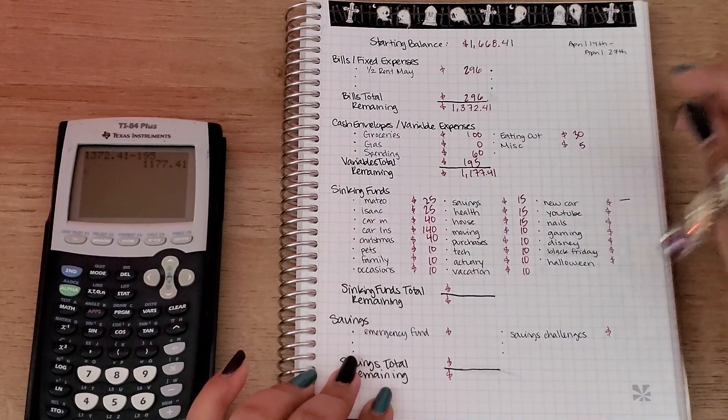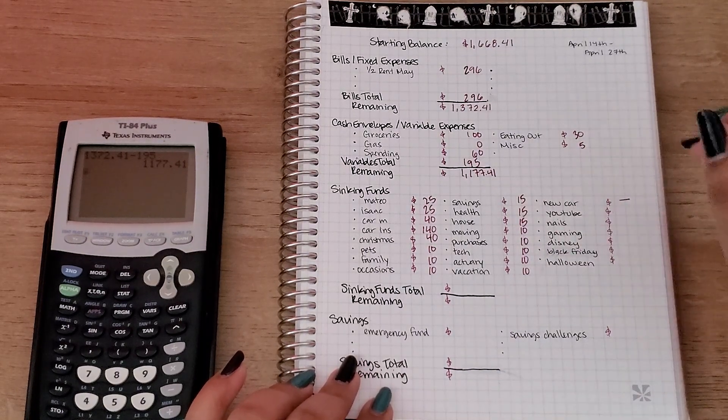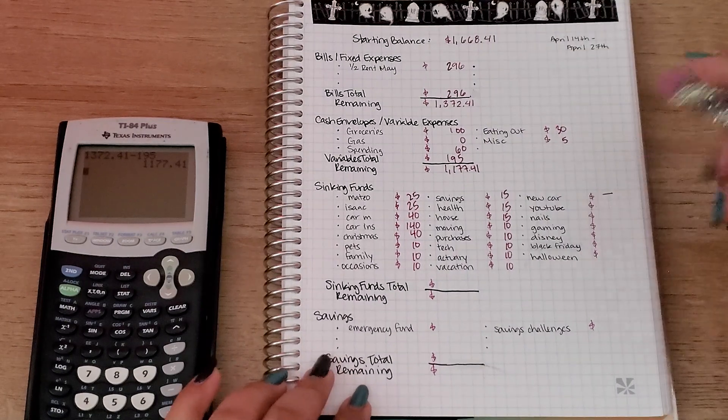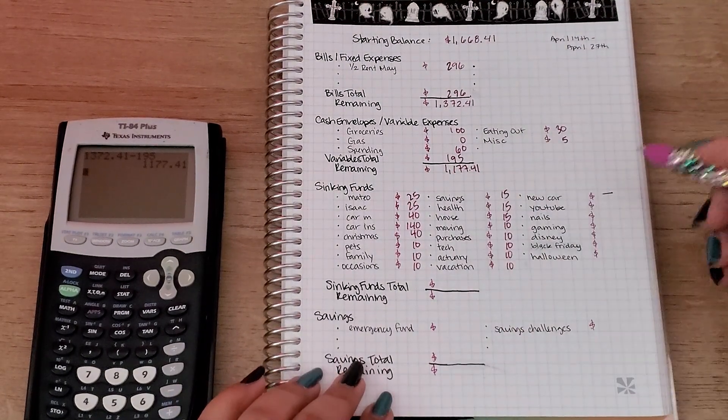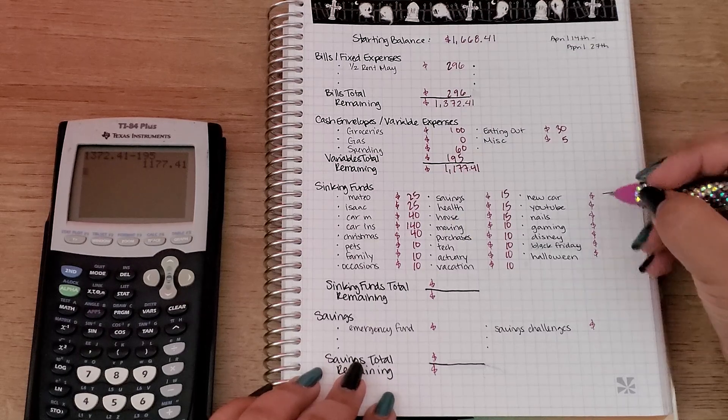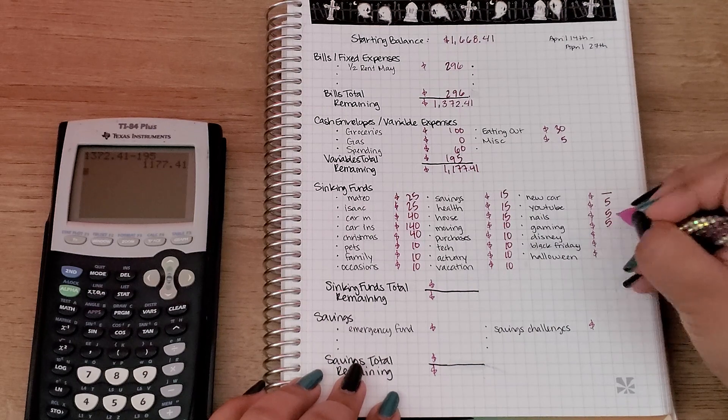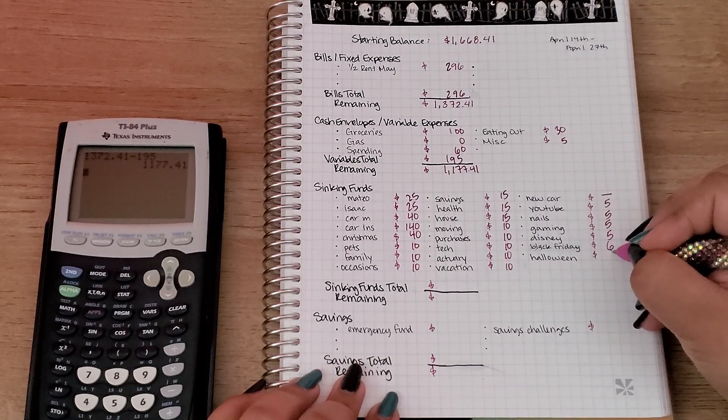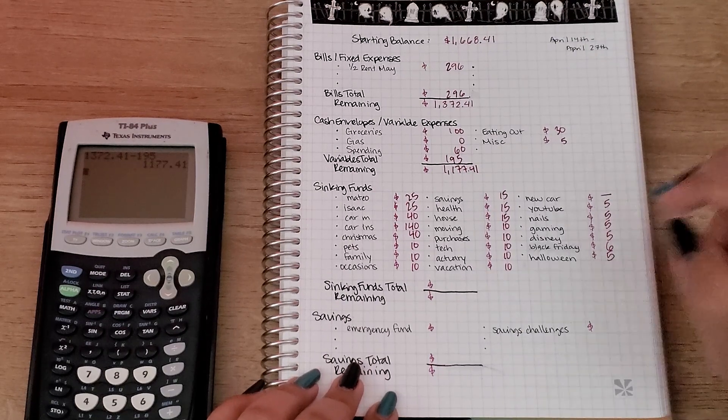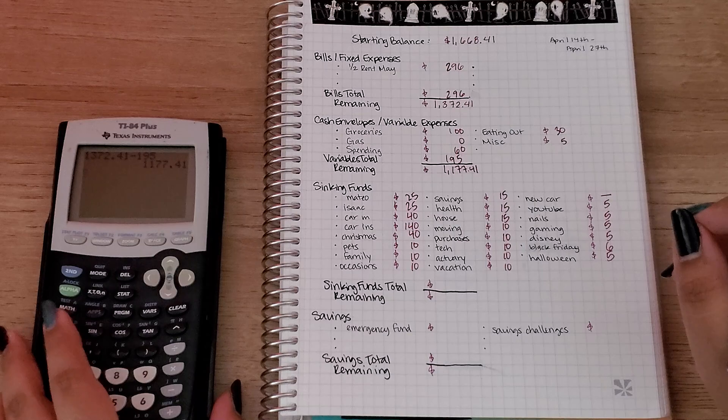And then new car is not going to get anything. I'm still not really focusing on new car, I really want to focus on my emergency fund. So that's why I'm not putting too much money into most of these categories. YouTube is going to get $5, nails $5, gaming $5, Disney $5, Black Friday $6, and Halloween $5.